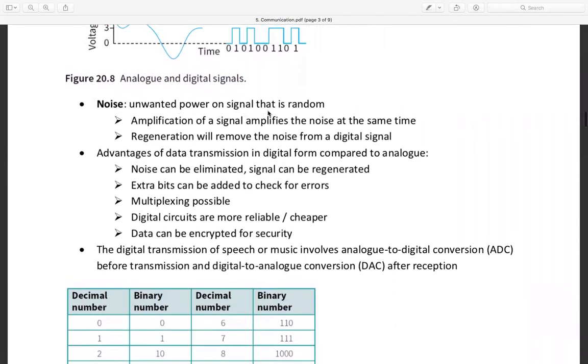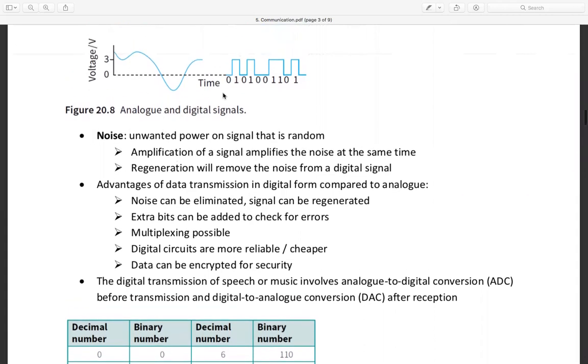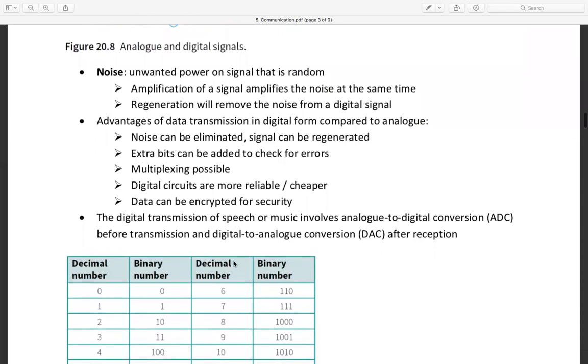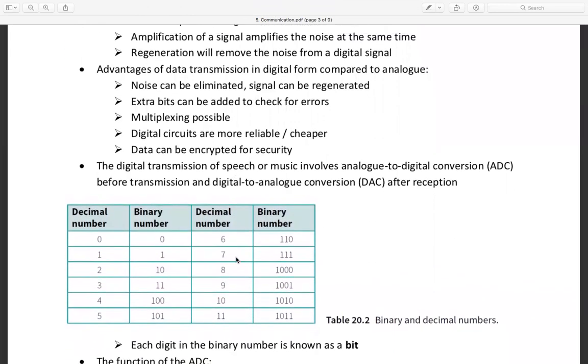This is analog and digital signal. This is analog on the decimal number and this is digital on binary number, zero and one. Noise is unwanted power on signal that is random. Amplification of signal amplifies the noise at the same time. Regeneration will remove the noise from digital signal. Advantages of data transmission in digital form compared to analog: noise can be eliminated, so the noise is small because it is in the form of digital data. There is no amplitude range that goes up and down, it tends to be constant. Multiplexing is possible. Digital circuits are more reliable and cheaper. Data can be encrypted for security.